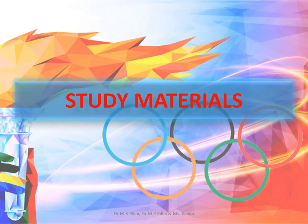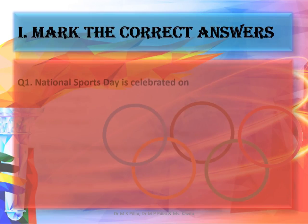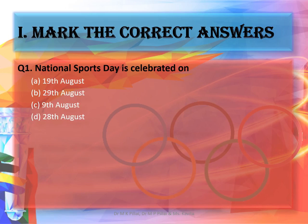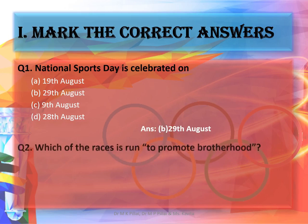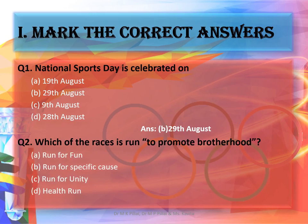Now let's look into the study materials. Mark the correct answers. Question one: National Sports Day is celebrated on — and the correct answer is 29th August. Question two: which of these races is run to promote brotherhood — and the correct answer is option C, Run for Unity.